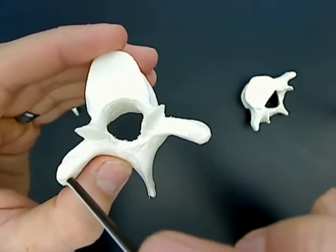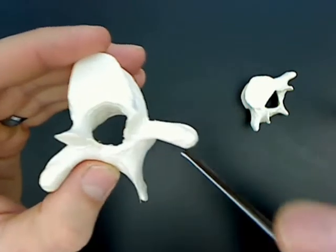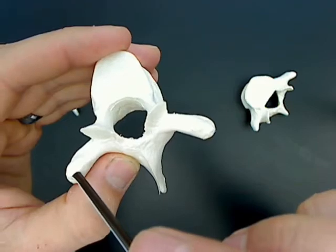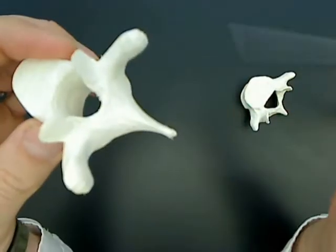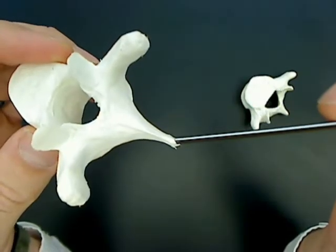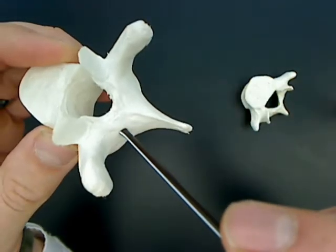These are transverse processes. So transverse process, transverse process. The lamina connect the transverse process to the spinous process. So this back here is spinous process, and here you have lamina, and here you have lamina.